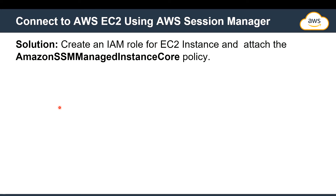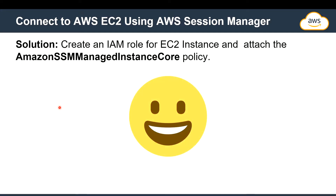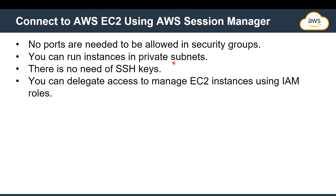For that we use something called AWS Session Manager. It's really simple — you create an IAM role for the EC2 instance and attach the policy AmazonSSMManagedInstanceCore to that role. This allows you to log into your EC2 instance in the browser itself without requiring any port or SSH enablement — those things are completely bypassed.